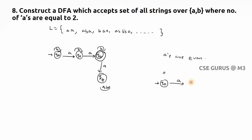This is the zero-remainder state and this is the one-remainder state. Zero remainder means even count, one remainder means odd count. Even is required, so: one A goes to Q1, two A's go back to Q0, third A to Q1, fourth A to Q0. For B's, any number is allowed, so self-loops on B for both states.